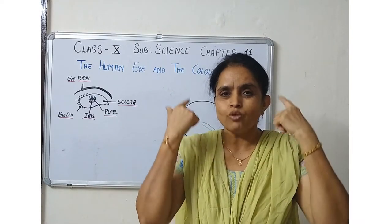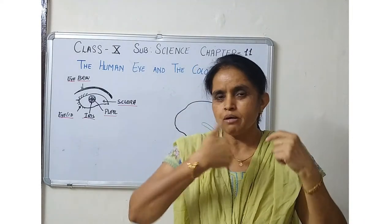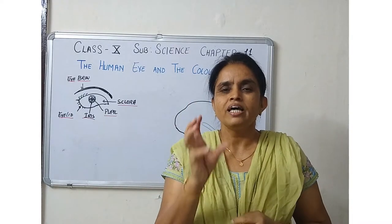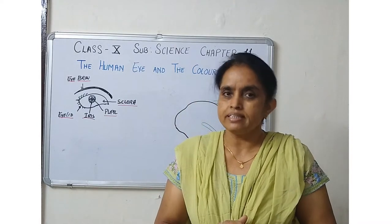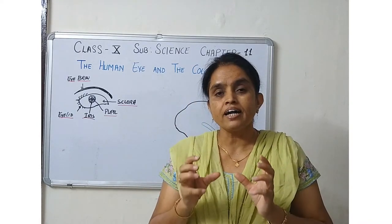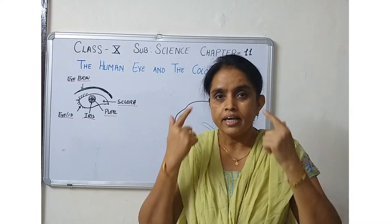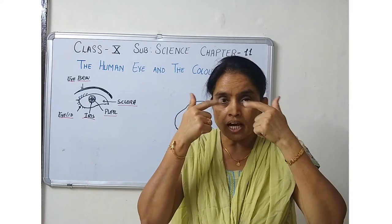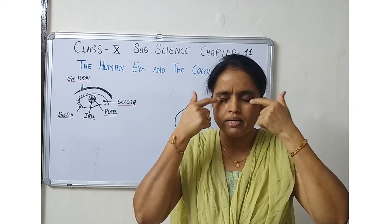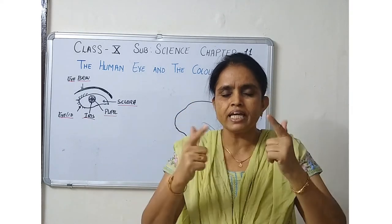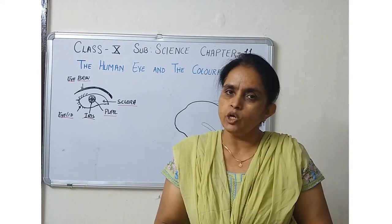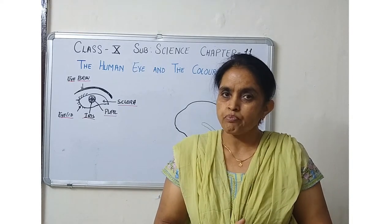First, we will see where our eyes are located. The bone structure above the neck is called the skull, and our eyes are located in the bone cavity of the skull. In this skull, there is a bone cavity, and the eyes are located inside it.